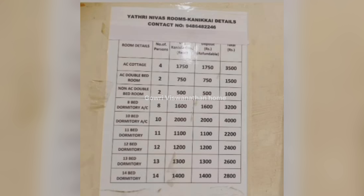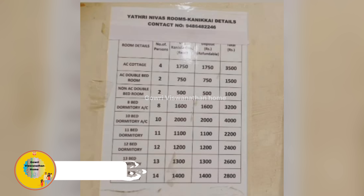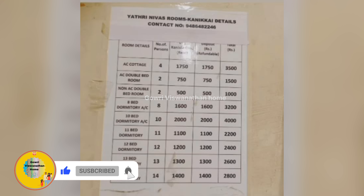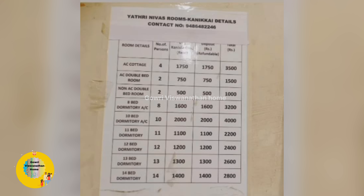In this catalog, we call room tariff. We have AC Cottage — 4 pages, 5,800. AC Double Bedroom — 2 pages, 750. That is Non-AC Double Bedroom — 2 pages, 500.